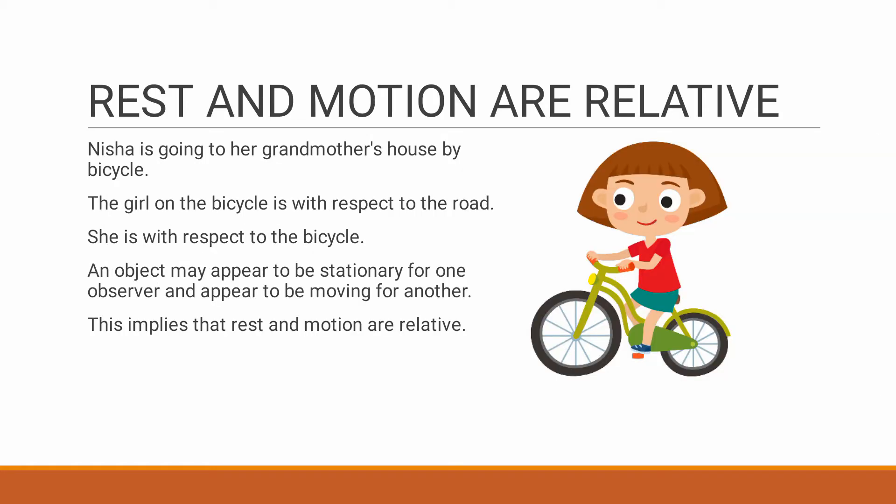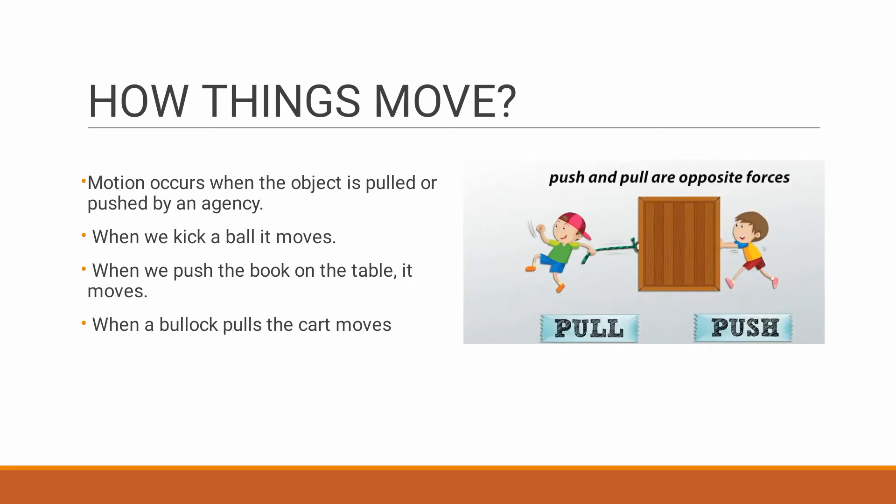Now rest and motion are relative. It can be explained with an example. Here the girl is riding her bicycle to her grandmother's home. There are two factors in this: first one is the girl on bicycle with respect to road and second is the girl with respect to bicycle. First factor is that the girl is in motion, that is she is moving with respect to the road. Second factor is that the girl is stationary, she is in rest with respect to bicycle. She is not moving anywhere in the cycle, she is stationary with the cycle. So with this we can conclude that rest and motion are relative.